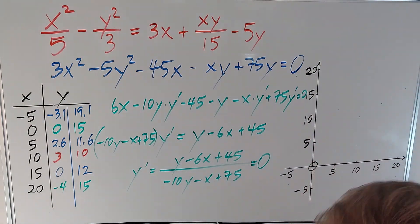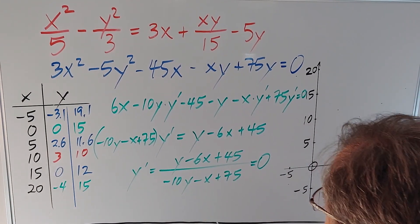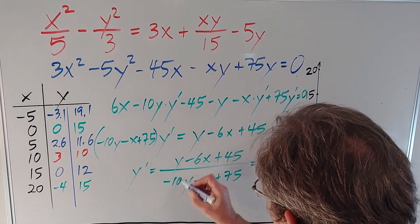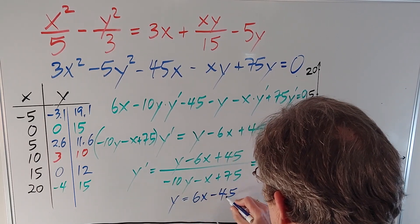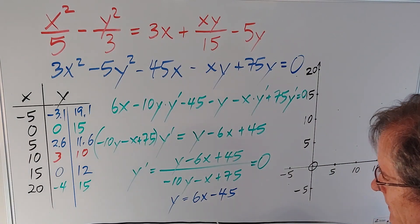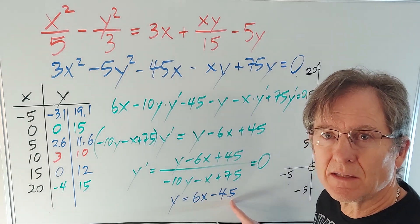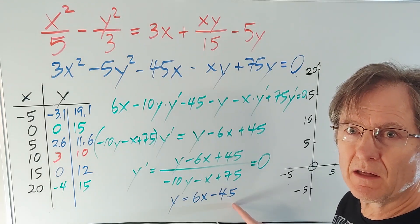So we can ignore the denominator just like you ignore your mother or your spouse. Only the numerator can make it equal to zero. So if I set that equal to zero, I'm going to get y = 6x - 45. What does that mean? What does that tell us?